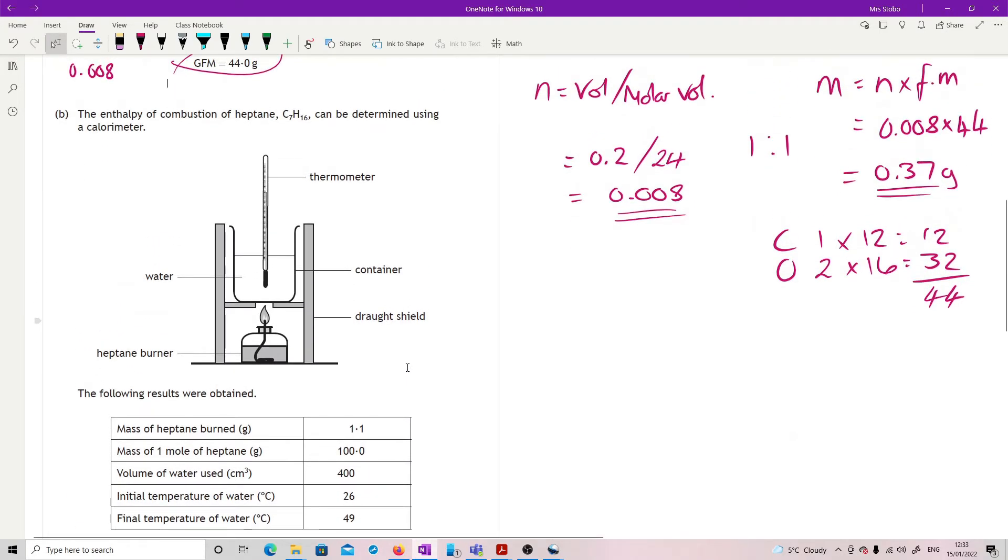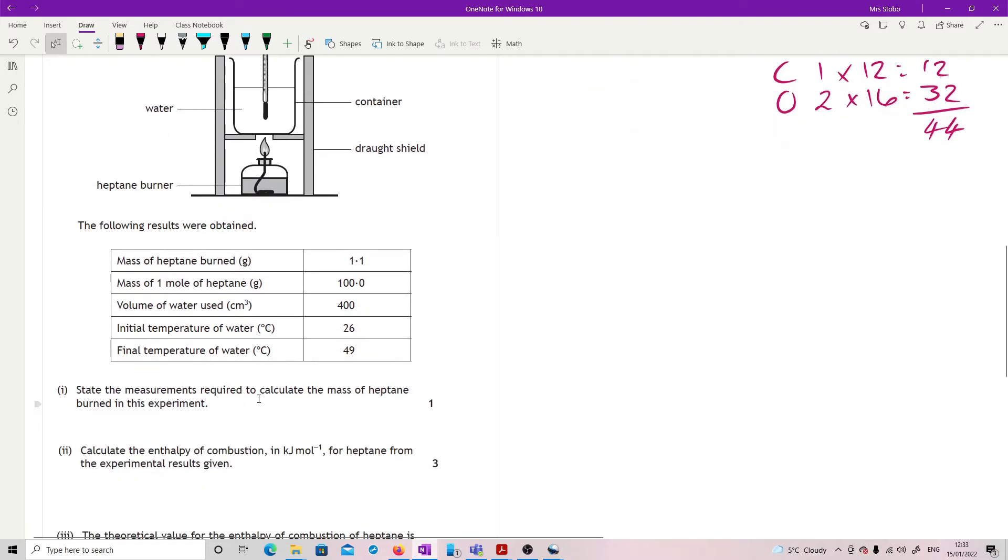Enthalpy of combustion of heptane. C7H16 can be determined using calorimeter. You have a little picture of this one. Following results were obtained. Mass of heptane burned. The mass of one mole of heptane. Volume of water, initial and final. State the measurements required to calculate the mass of heptane burned in this experiment. This one's kind of okay. So this is just the weight of the burner. So I need the burner mass before and after the heating. That's it.